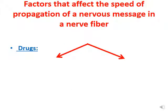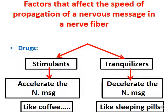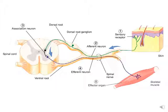Drugs are another factor affecting the speed of propagation. They are divided into two types: stimulants, which accelerate the nervous message — for example, coffee contains caffeine and makes the message faster — and tranquilizers, which slow down the nervous message, like sleeping pills.